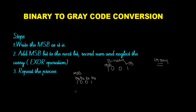My first step is: write the MSB bit as it is. So I am taking this MSB bit as it is. Here the MSB bit is 1, so I took that MSB bit as it is, that is 1. Then going to my second step: add the MSB bit to the next bit, record the sum, and neglect the carry.